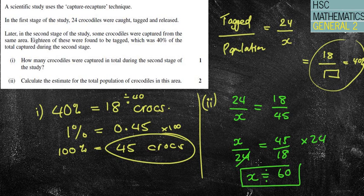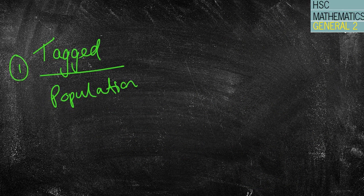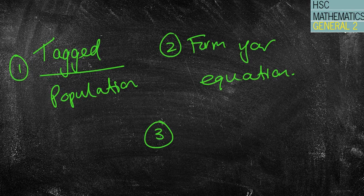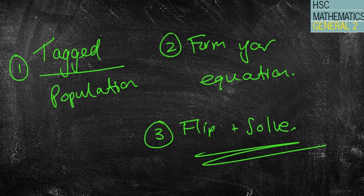Look, that's pretty much it, guys. Again, it comes back to doing your tagged over your population. I might just rewrite that here. So doing your tagged over your population. So that's number 1. Number 2, form your equation. Number 3, flip and solve. That's pretty much it, guys. Most of the questions will be pretty straightforward. That last one was probably the hardest one I've seen. It's pretty straightforward, as I said. Just have a crack at some of the questions, guys, and let me know if you have any issues. Have an awesome day.